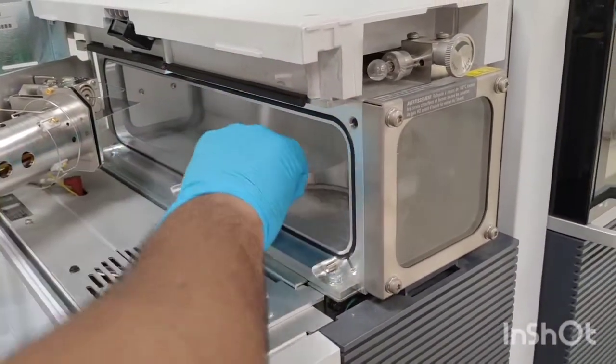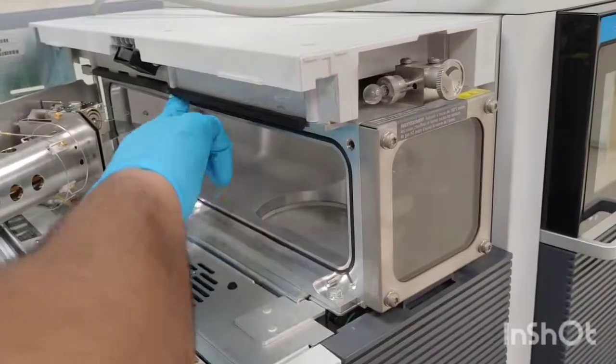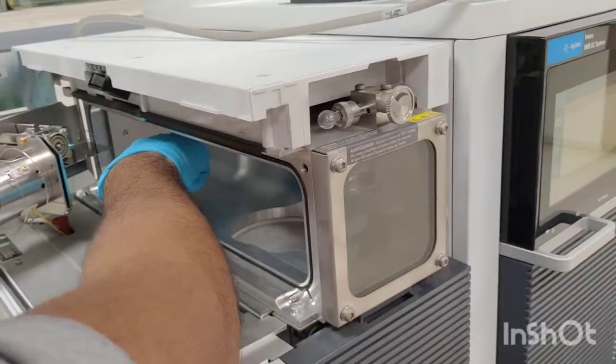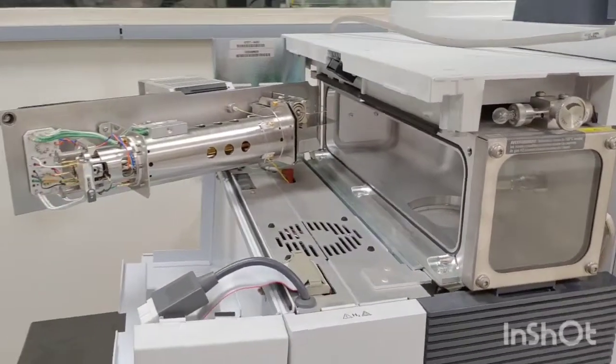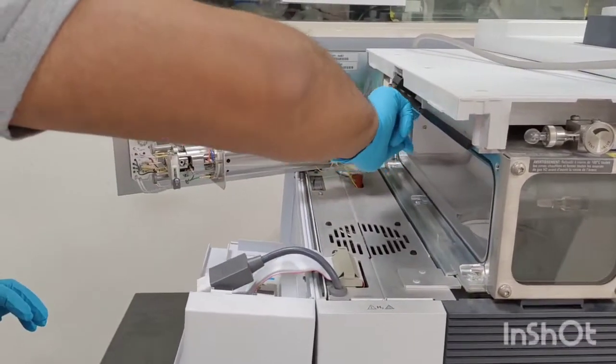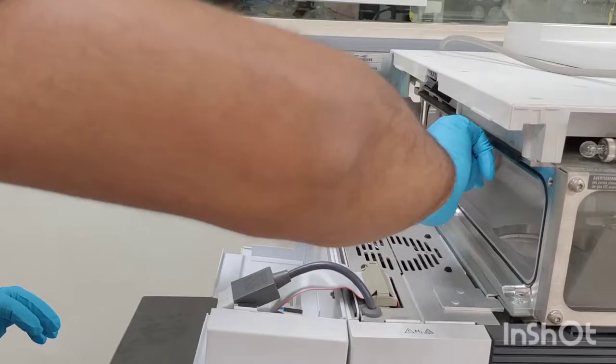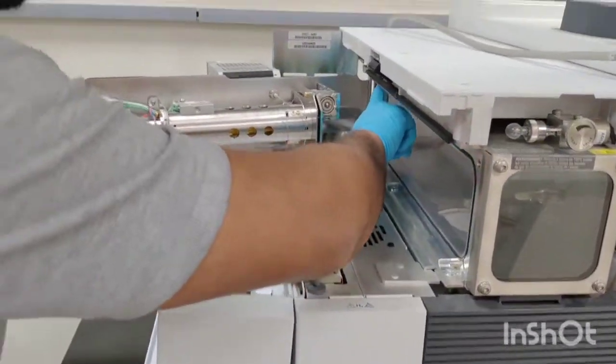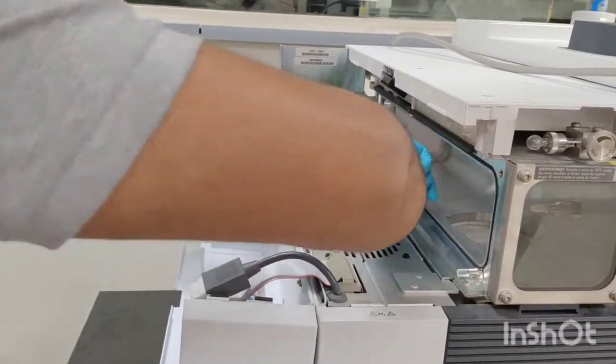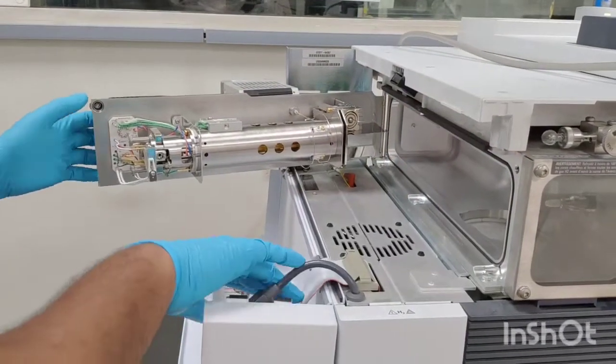Some of the times when we open the ion source, this O-ring may come out of its slot and when we try to restart the GC-MS, it may show some kind of leakage. So just using fresh gloves, just press your finger over here outside, nothing inside, that O-ring is perfectly fit, fixed.